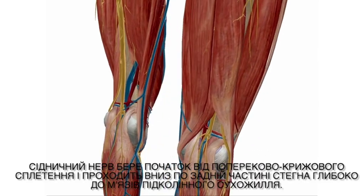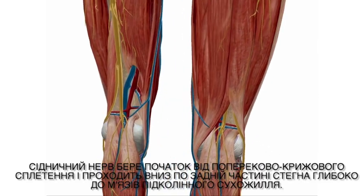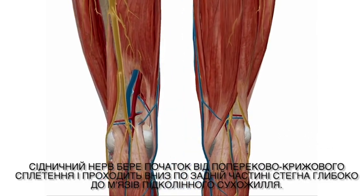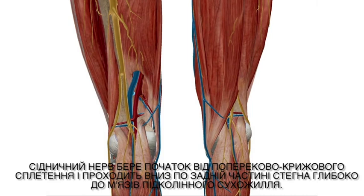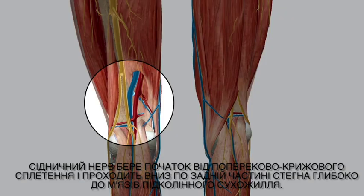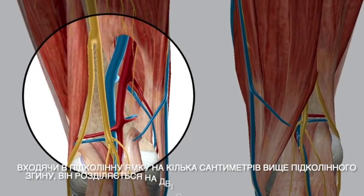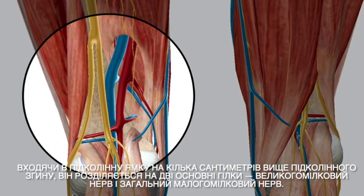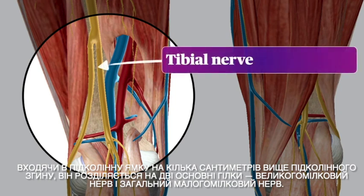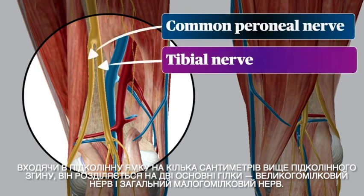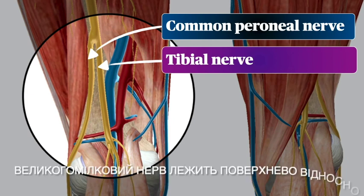The sciatic nerve originates from the lumbosacral plexus and travels down the posterior thigh deep to the hamstring muscles. As it enters the popliteal fossa several centimeters above the popliteal crease, it separates into its two principal branches: the tibial nerve and the common peroneal nerve.